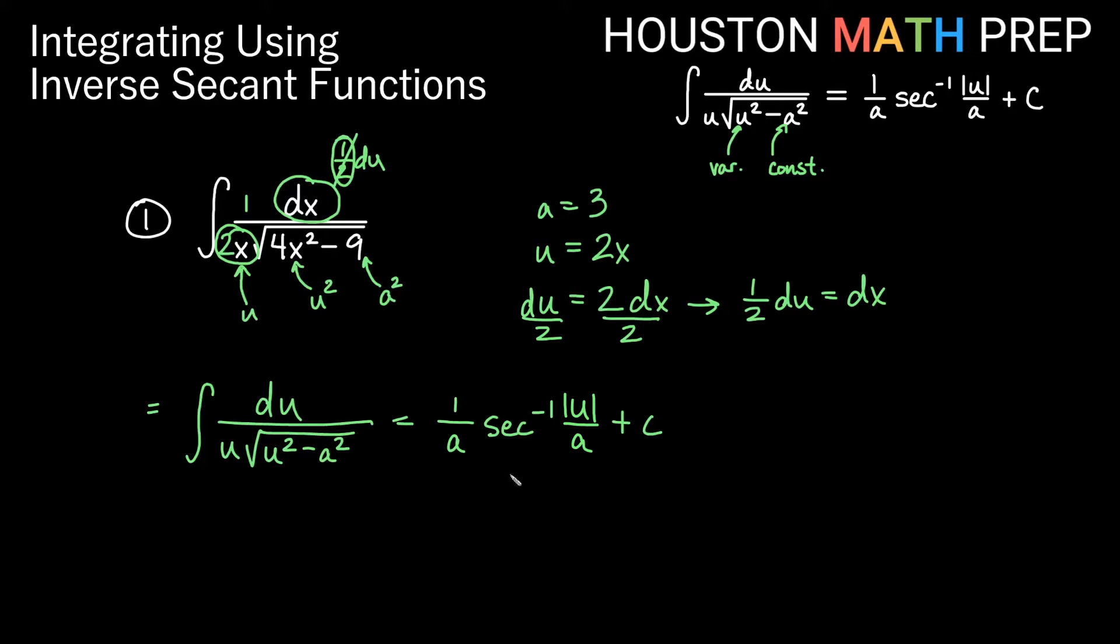And now we just go back and replace everything. a is 3 and u is 2x. So we get 1 third inverse secant of 2x over 3 plus our constant.